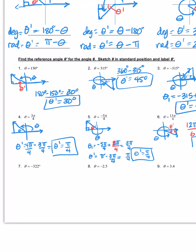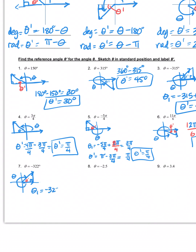Number seven: negative 322 degrees. Going clockwise, negative 90, negative 180, negative 270 — so 322 puts us in quadrant two. Since it's negative, I do the coterminal step: negative 322 plus 360 gives 38 degrees. Is that a positive acute angle with the x-axis? Yes — so theta prime is 38 degrees.